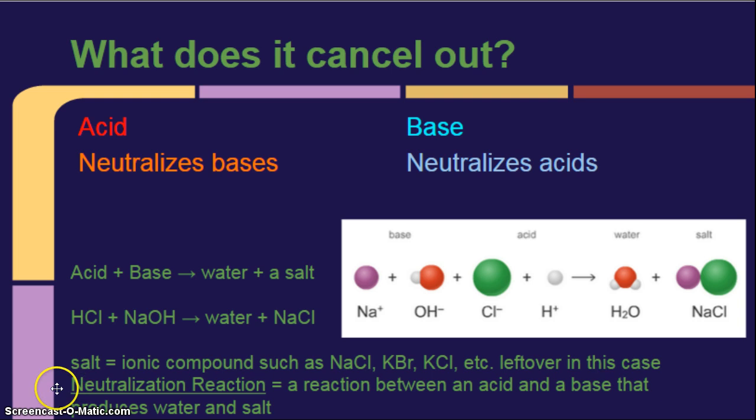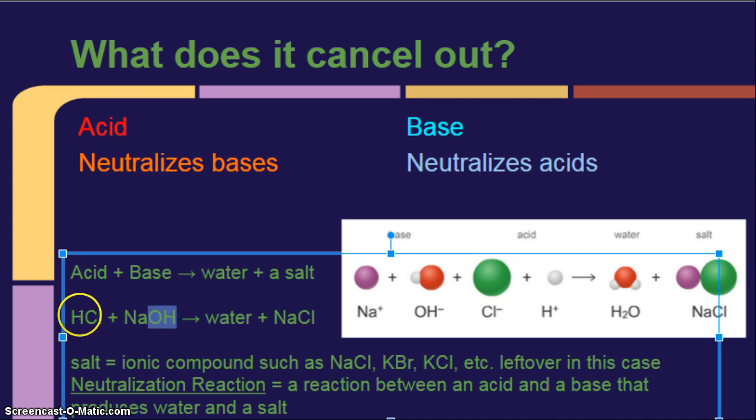Neutralization reaction. Make sure you write this down. A reaction between an acid and a base that produces water and a salt to remind us that it does not have to be table salt. Even though in my example up here, I gave you table salt. So, I have the H and the OH come together. So, I have H2O, that makes water. And, I have my Na come together with my Cl to make a salt.